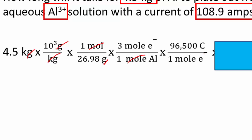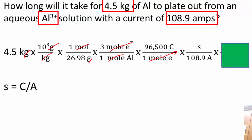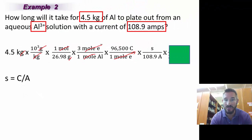Now we need to get coulombs to seconds. So remember, a second equals a coulomb divided by the amp. So we want to put the amps on the bottom. And so we want to put the 108.9 amps. And a coulomb is an amp per second. And so that's going to cancel out. So we have that.